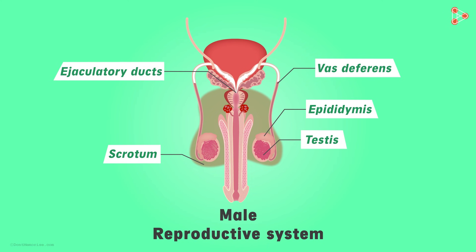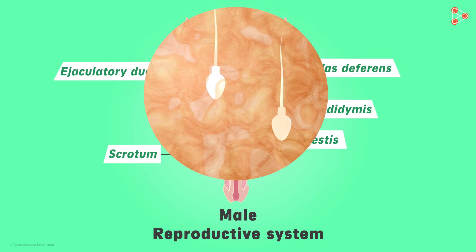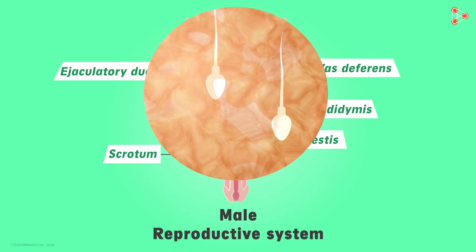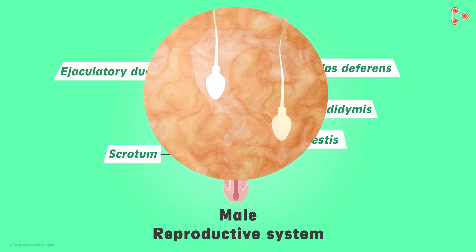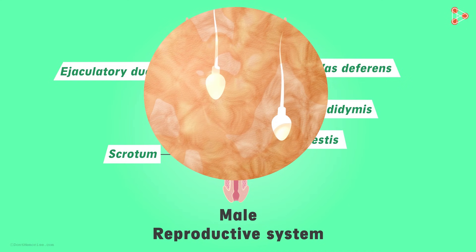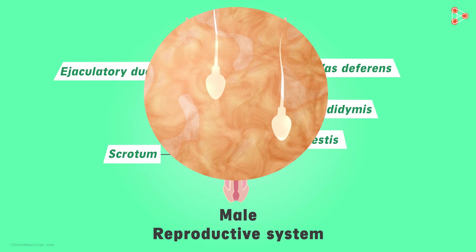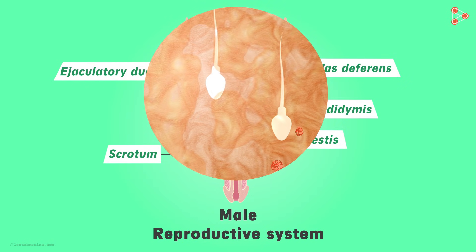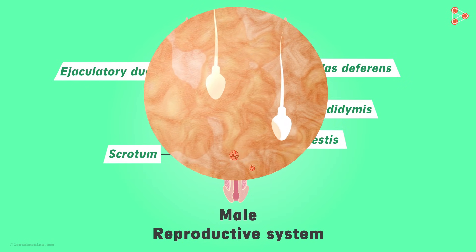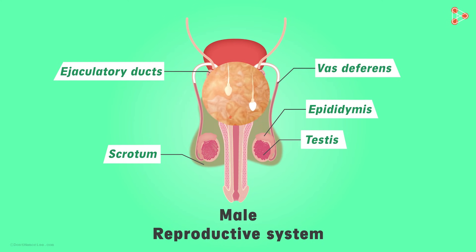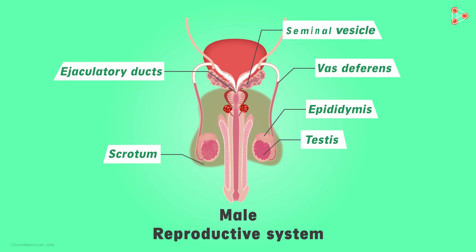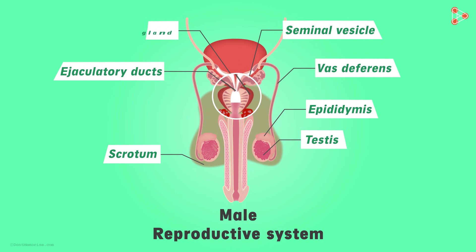The ejaculatory duct heads to a destination where the sperms get mixed with nourishing fluid. The sperms need nourishment to survive, and they also need to be protected from acidic conditions. Hence, various glands come to the rescue by secreting important secretions. The first is the seminal vesicle, which secretes a fluid that helps in nourishing the sperms. The bulb-like structure here is the prostate gland, which secretes the prostate fluid.